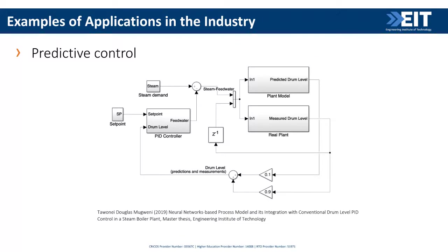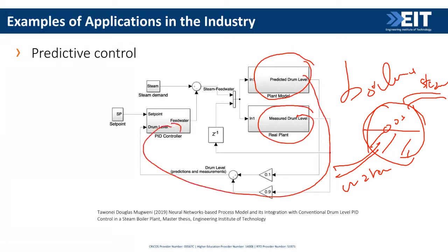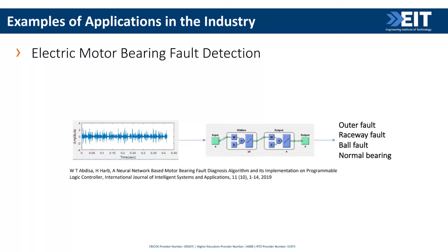Predictive control in boilers: specifically the boiler drum, where water is heated to produce steam. The control challenge is maintaining the water level in the drum, which seems simple but is not. A method used was to predict the future water level given current conditions, and combine the predicted level with the current level in a feedback controller. This worked quite well — at every moment there was a prediction of what would happen next.